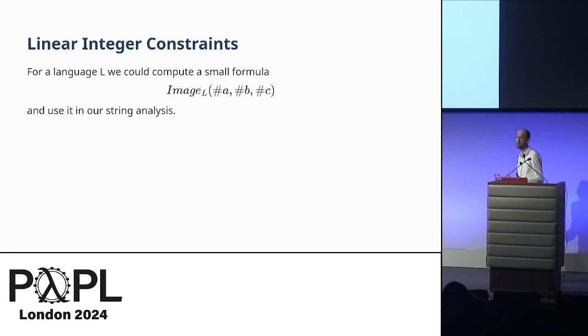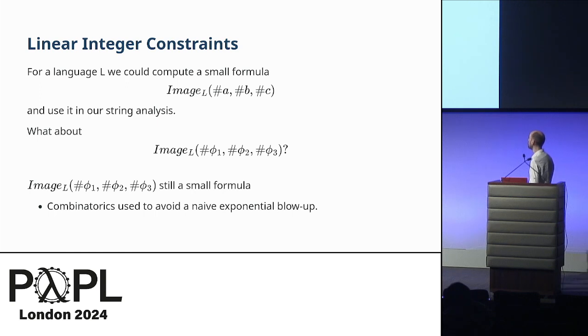One of the benefits of the Parikh image is that we could construct a small SMT formula that would allow us to characterize that Parikh image and use it with other constraints. But how about if we do this with a symbolic version? One naive problem with this is that a character A could satisfy this predicate, it could satisfy this predicate, and it could satisfy this one. So characters don't uniquely satisfy one thing. This gives us an exponential blow-up in that every character is a zero-one vector. It satisfies some predicates, it doesn't satisfy others. Fortunately, we show that you can actually encode this Parikh image still as a small formula, but we have to use some funky, fun combinatorics to avoid a naive exponential blow-up. So that is possible.